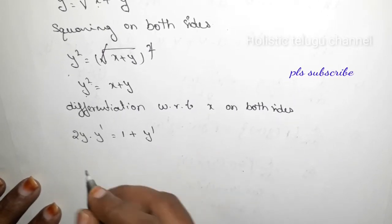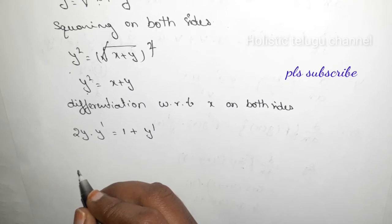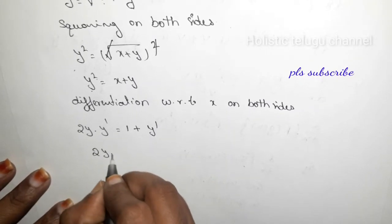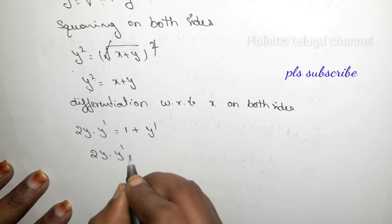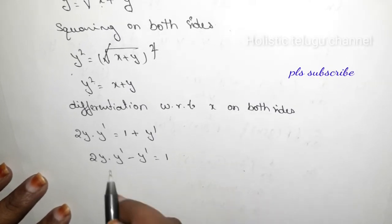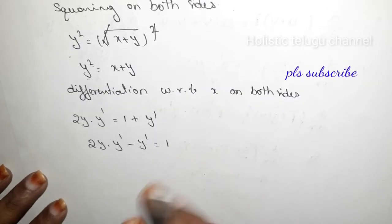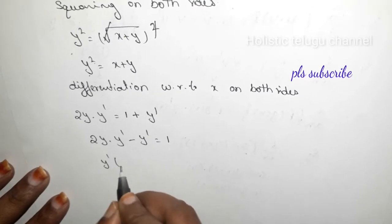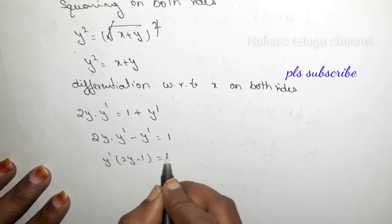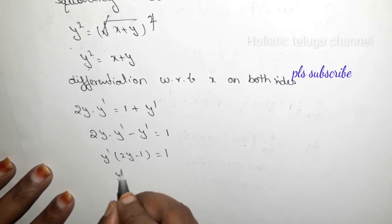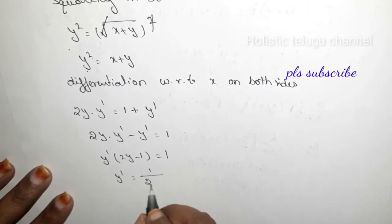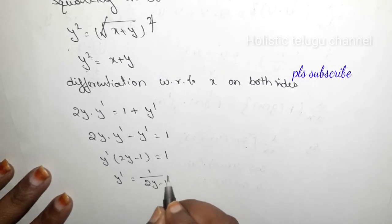So taking y terms together: 2y·y dash minus y dash equal to 1. So we factor out y dash: y dash into (2y minus 1) equal to 1. Therefore y dash equal to 1 by (2y minus 1).